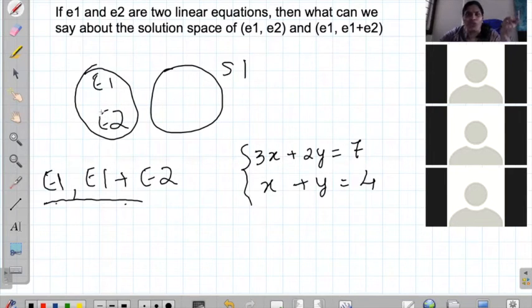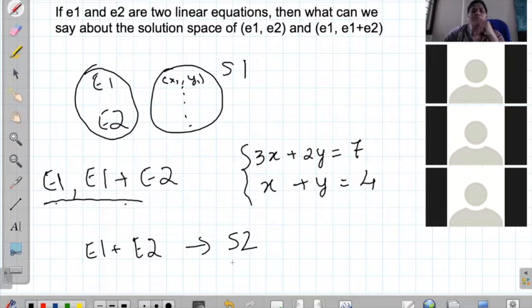I think you were there in the session before, right? So this is the set of all ordered pairs xy. So this is the two equations in xy. So these are all the sets of ordered pairs x1, y1 which satisfy these equations. So if this is s1 and then if we add e1 plus e2 and that gives us a solution space s2, I think last time we saw that s1 is a subset of s2. But what is the relationship between this s2 and e1 and how is the solution space of this? We call it s3. What is this? We are yet to see.